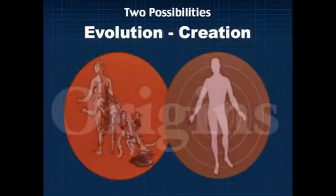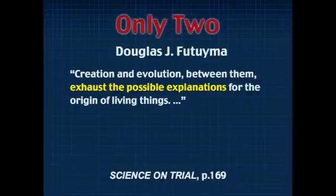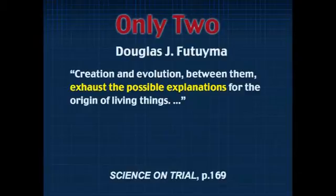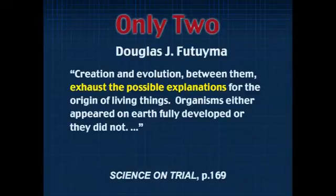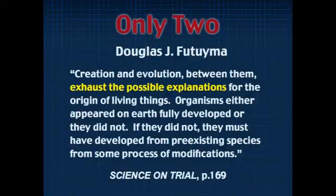We need to understand that as we are talking about origins, there are two possibilities, and only two — and that is important for several reasons. Douglas Futuyma, a very prolific writer against creation but a well-known scientist, says: 'Creation and evolution between them exhaust the possible explanations for the origin of living things. Organisms either appeared on earth fully developed or they did not. If they did not, they must have developed from pre-existing species by some process of modifications — naturally or suddenly, not natural.'